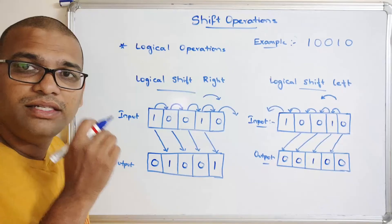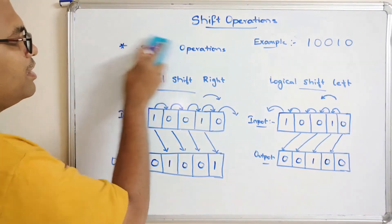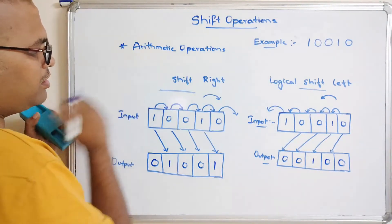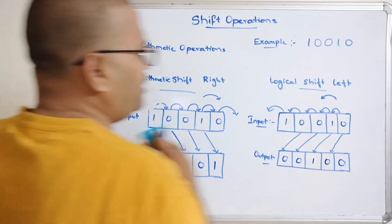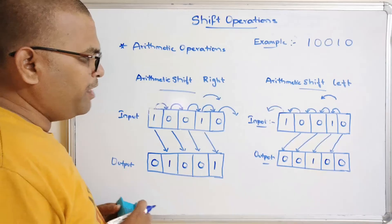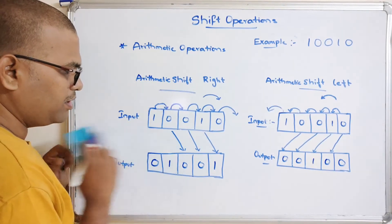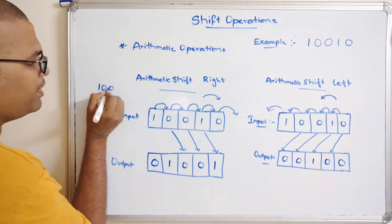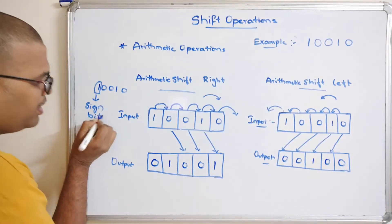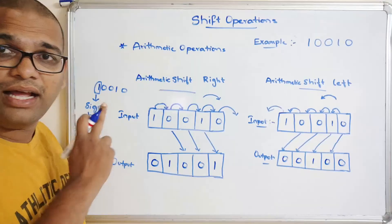So those are the logical shift operations — logical shift right and logical shift left. Now let us move on with the arithmetic operations. I will write the arithmetic shift right and arithmetic shift left.